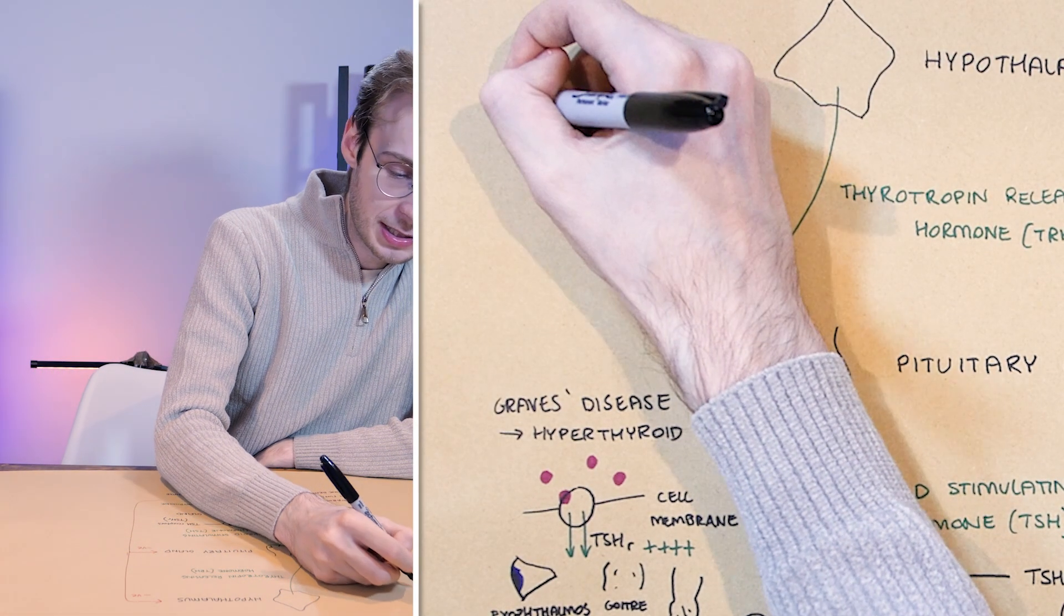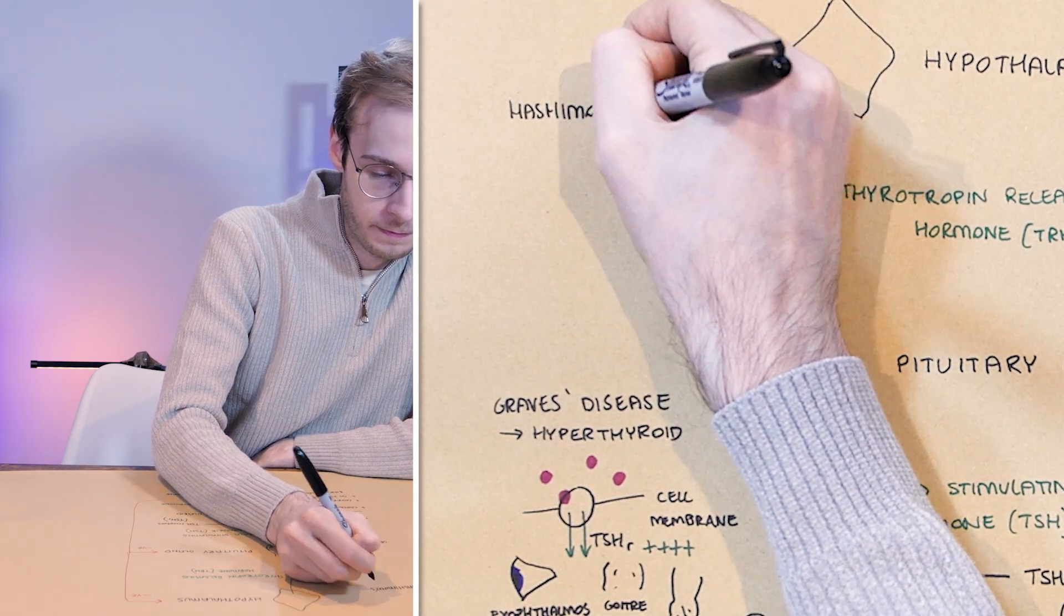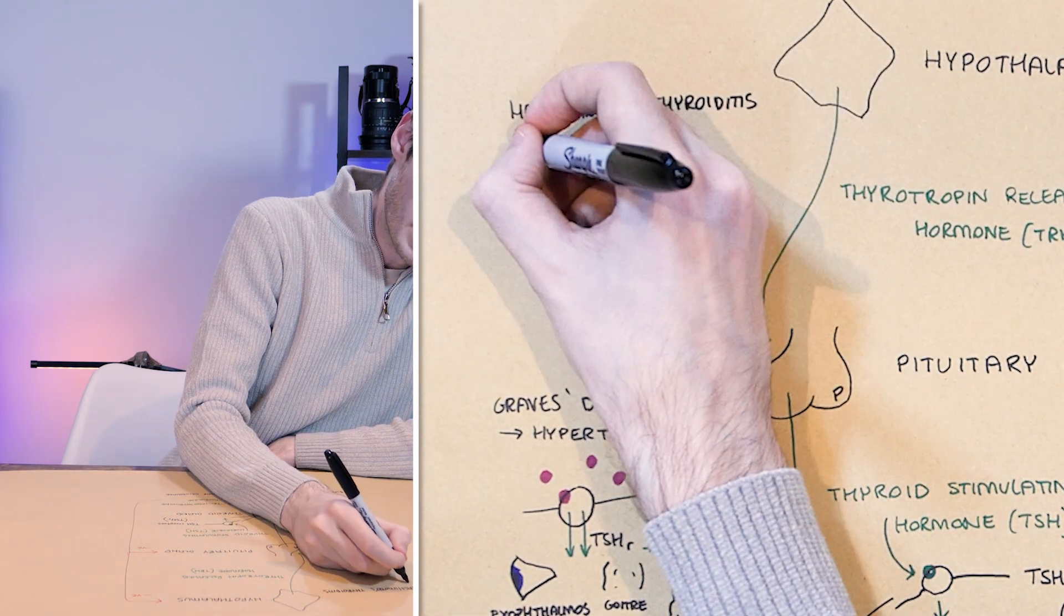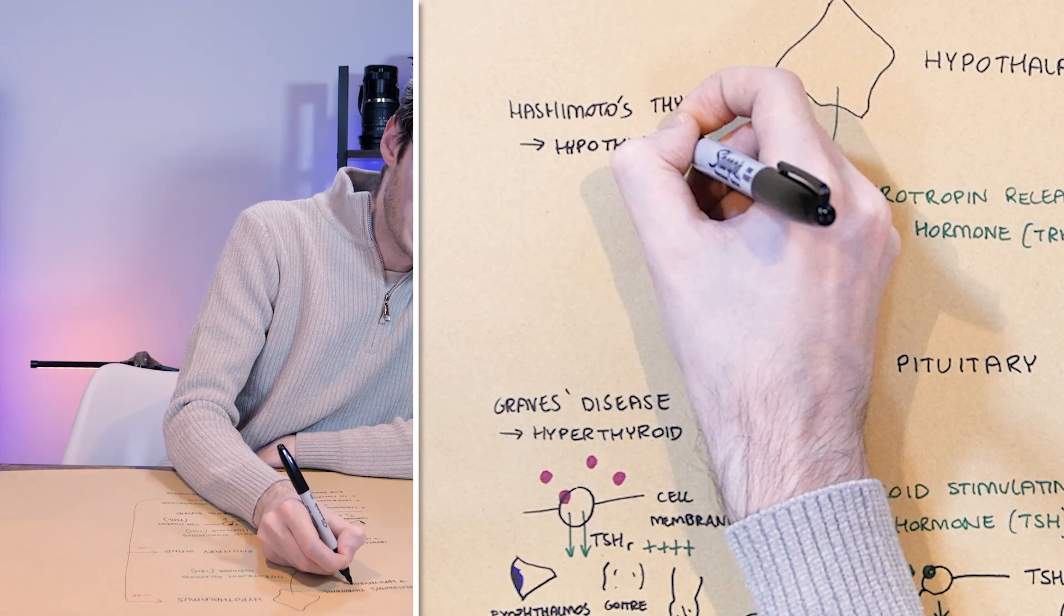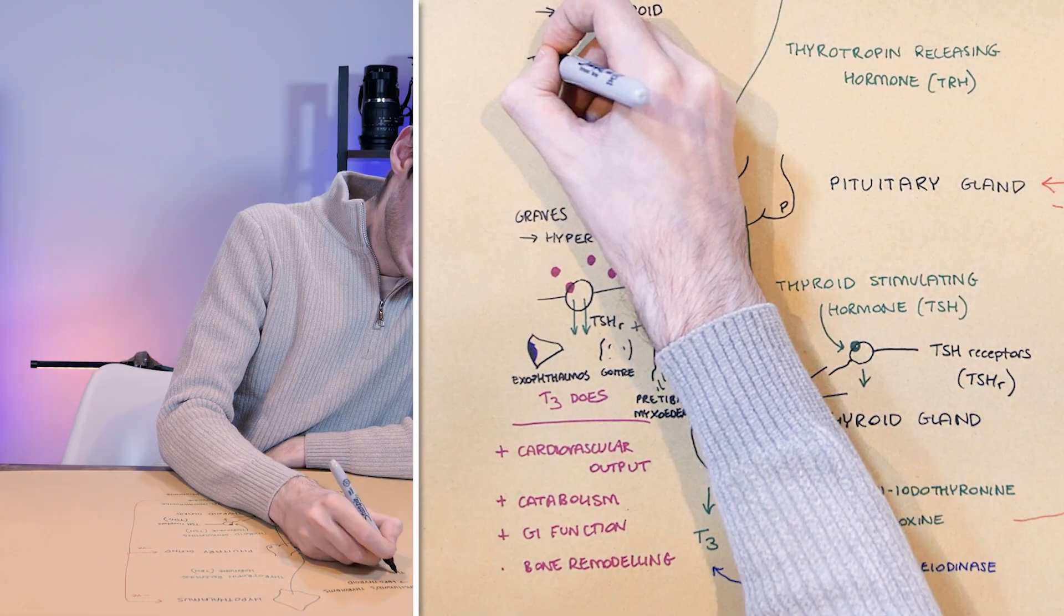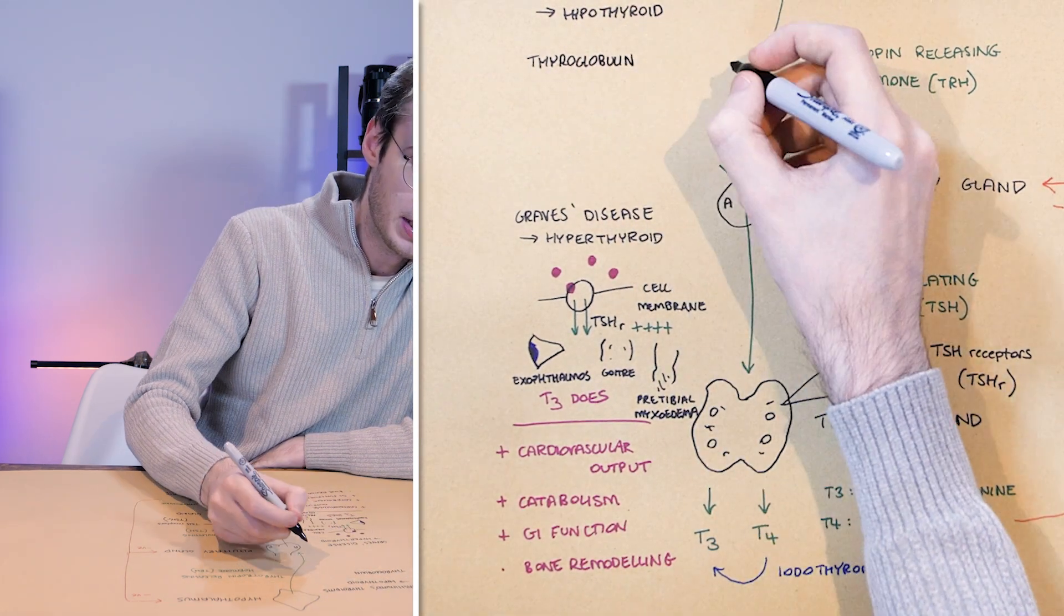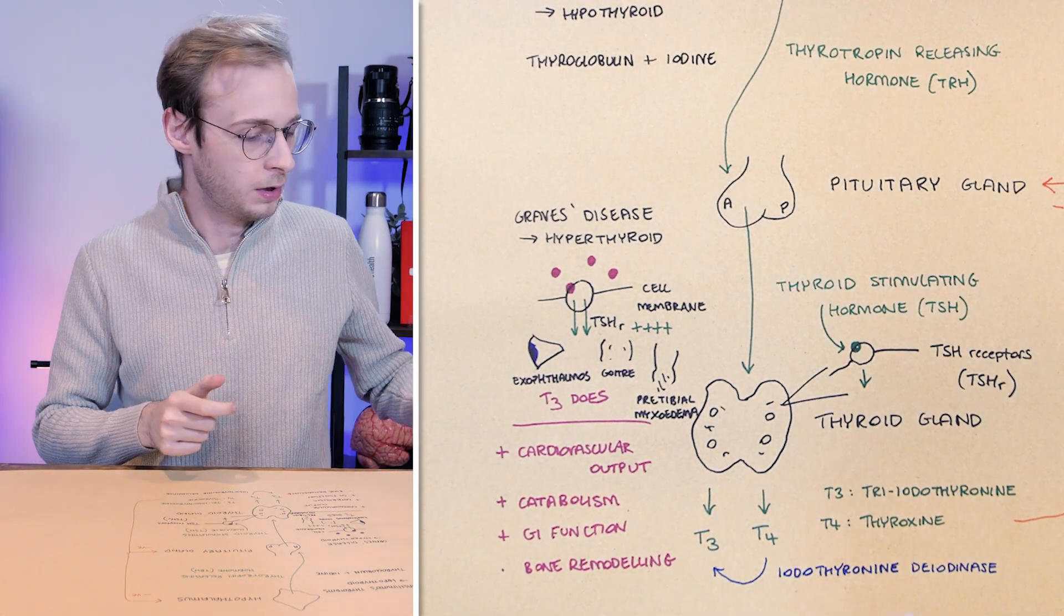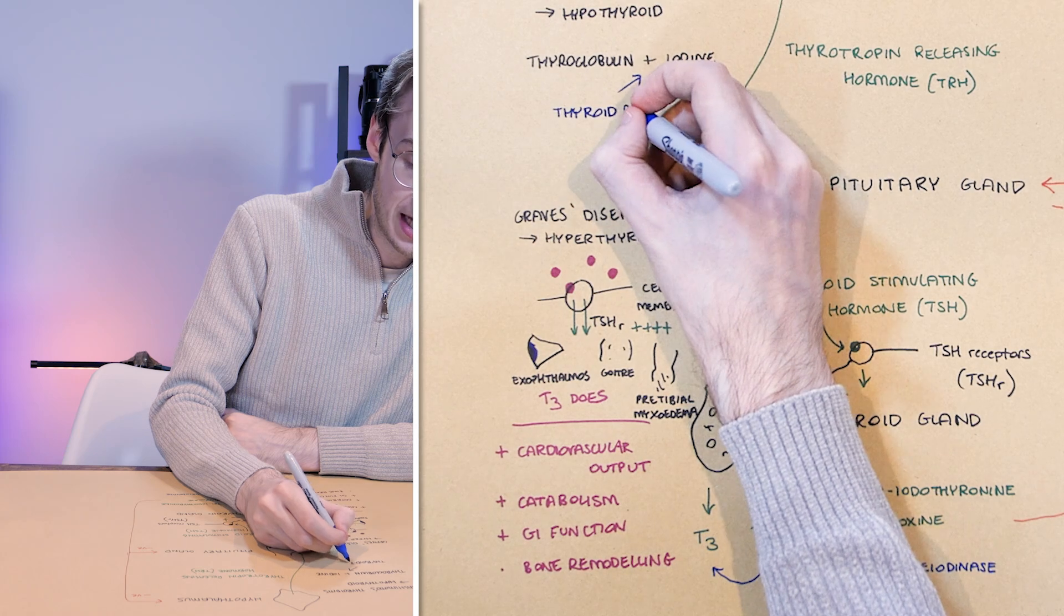Now, lastly, the other condition that you need to know about is something called Hashimoto's thyroiditis. And this instead tends to lead to a hypothyroid state or too little thyroid hormone. What happens within the thyroid gland is you have a precursor to the thyroid hormone to which iodine needs to be added to produce T3 and T4. And this reaction is catalyzed by an enzyme called thyroid peroxidase or TPO.